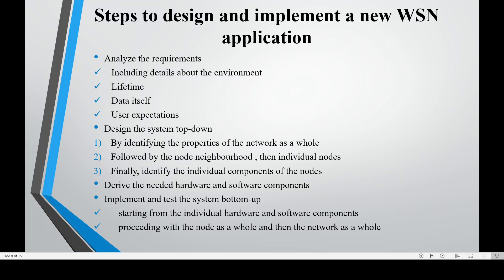Top-down design begins by identifying the properties of the network as a whole, followed by the node neighborhood, and then the individual node components. The next step is to derive the needed hardware and software components, and finally implement and test the system bottom-up, starting from the individual hardware and software components, then proceeding with the node as a whole, and then the network as a whole.